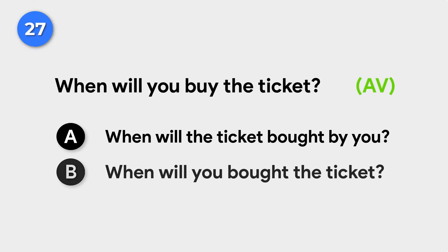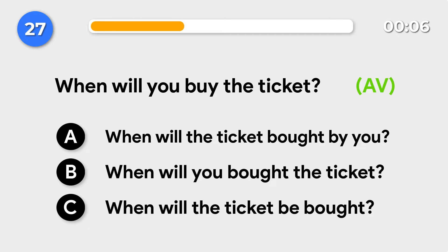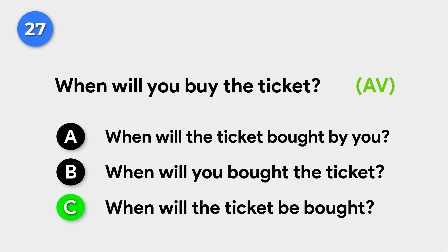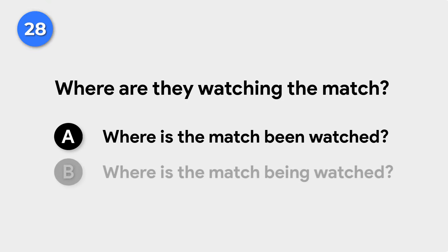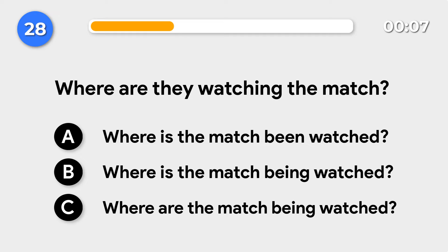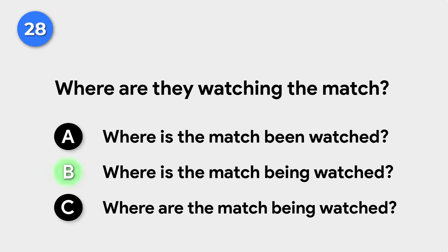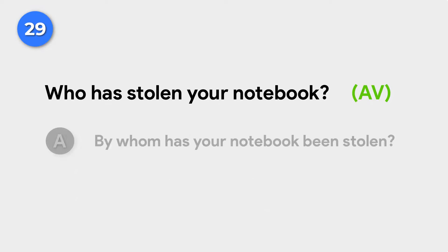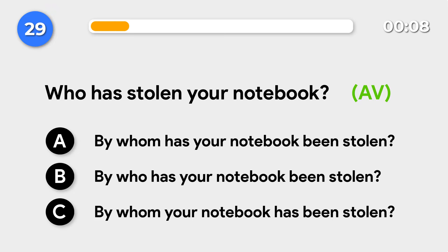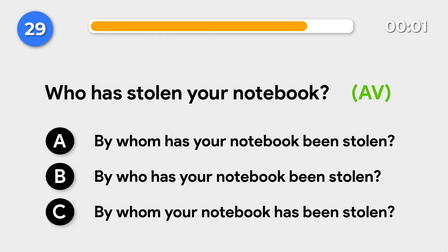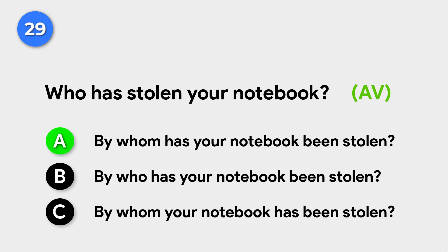When will you buy the ticket? → When will the ticket be bought? Where are they watching the match? → Where is the match being watched? Who has stolen your notebook? → By whom has your notebook been stolen?